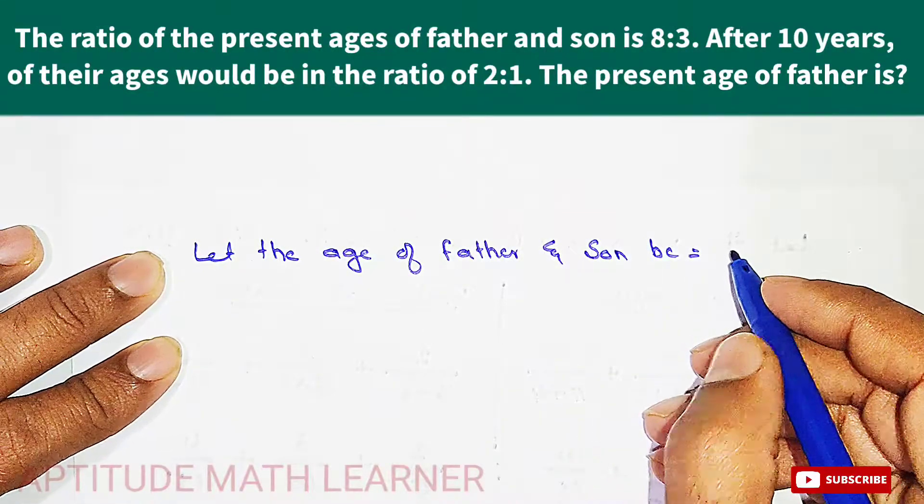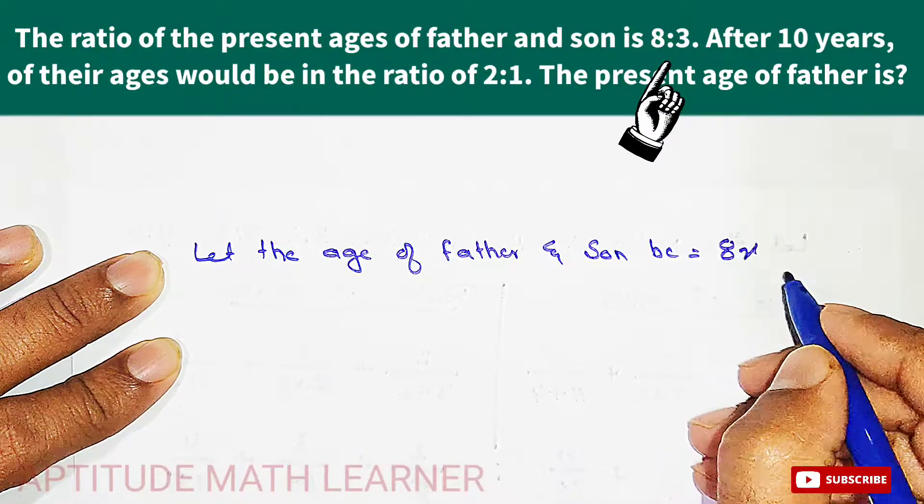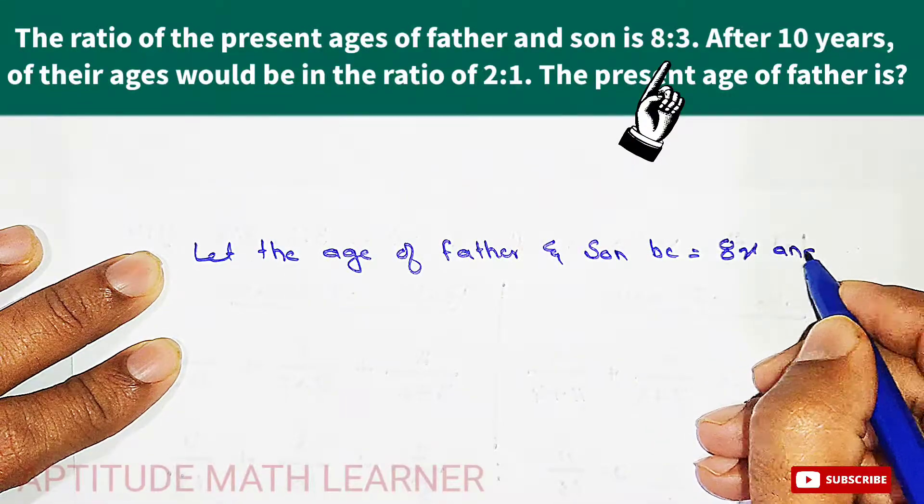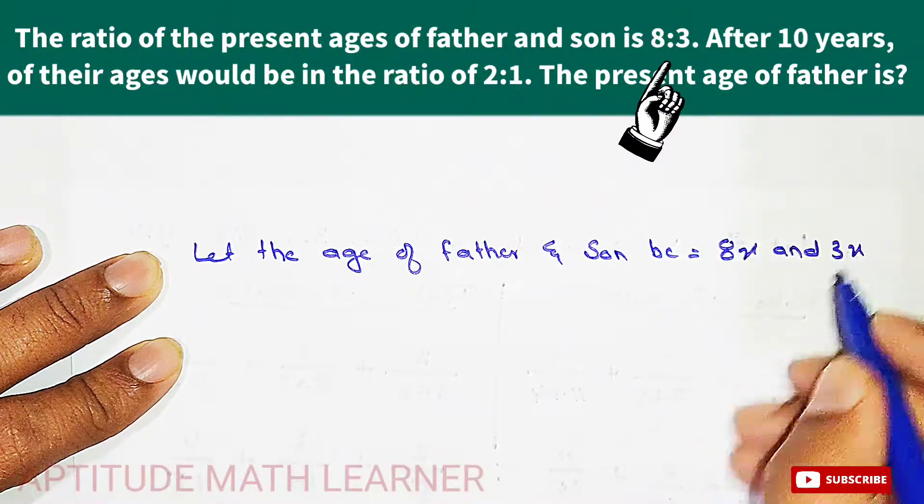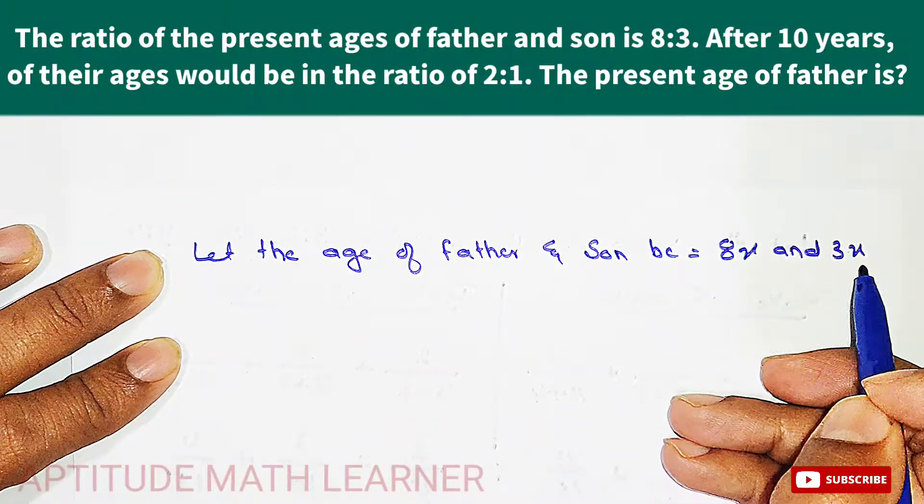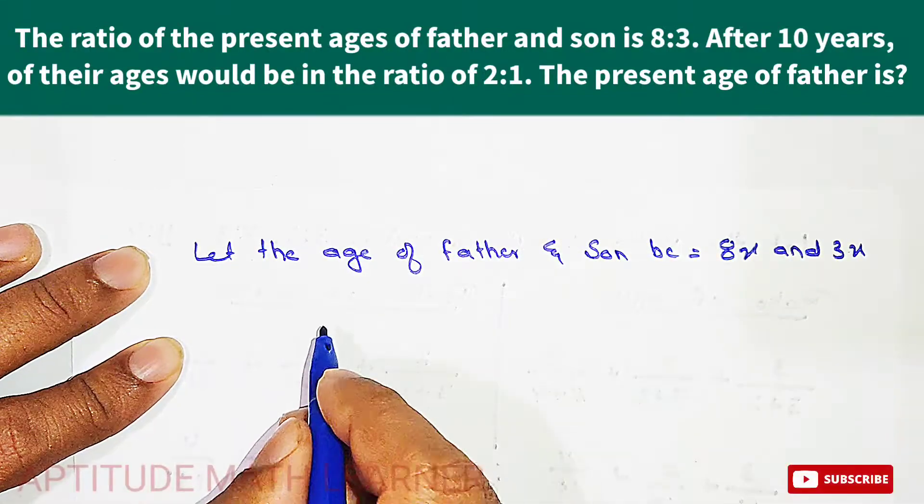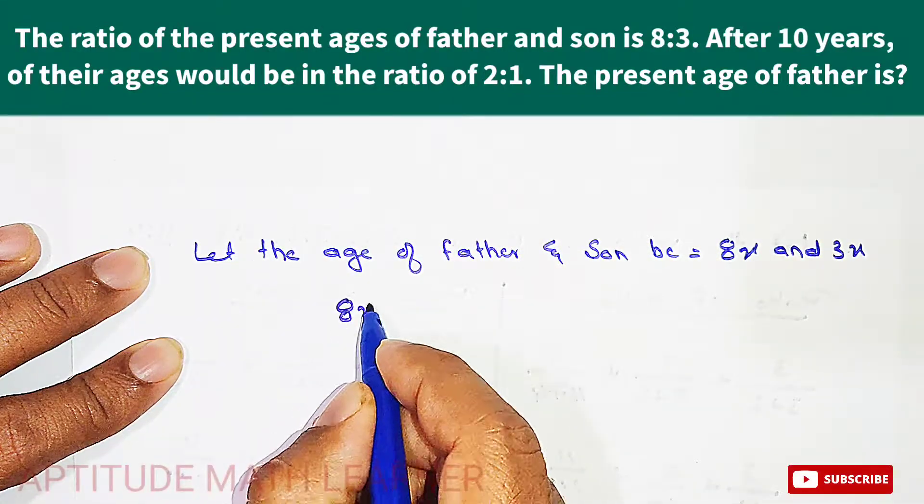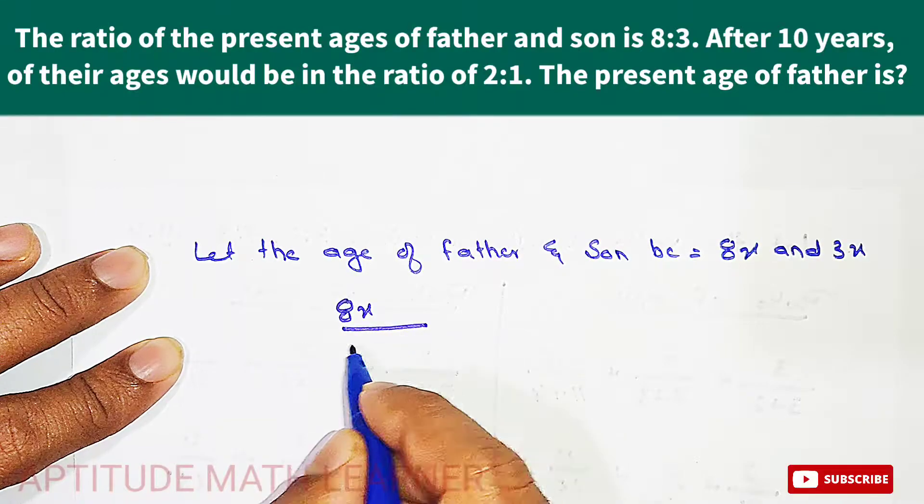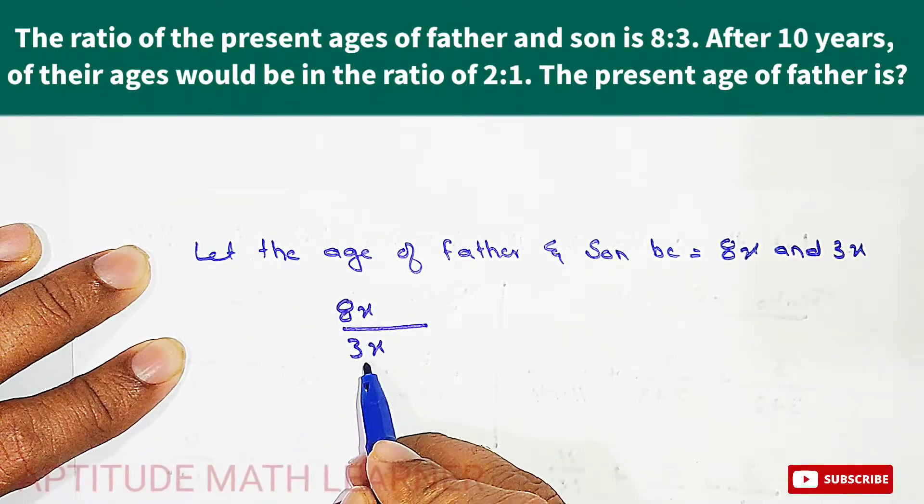This is in the ratio 8 to 3, so we take 8x and 3x. This is the ratio for father, 8x, and for the son we have taken 3x. So this becomes 8x divided by 3x for father's age and son's age.